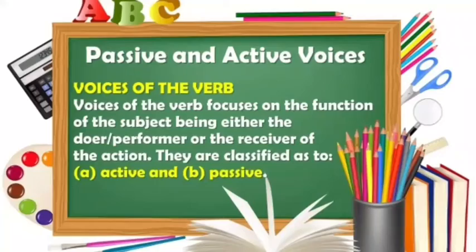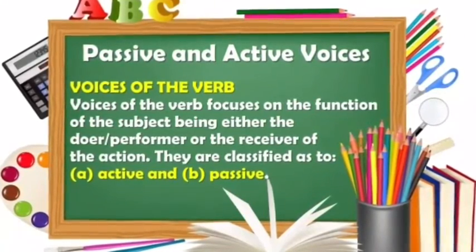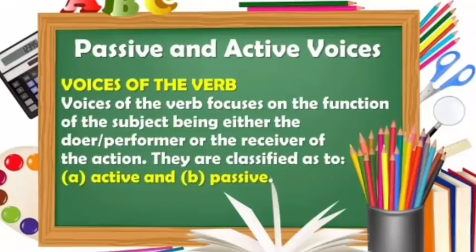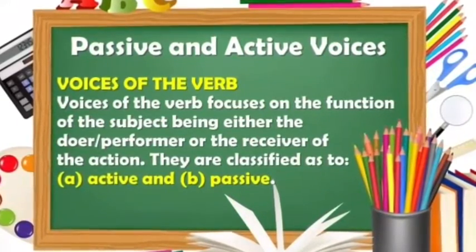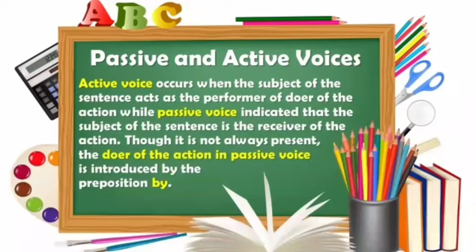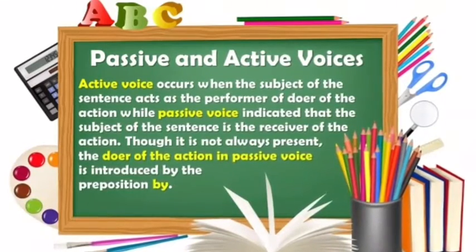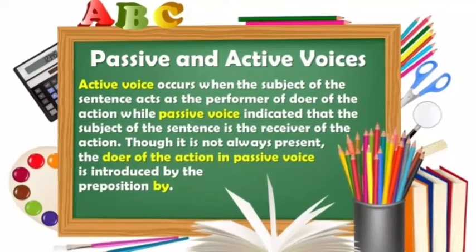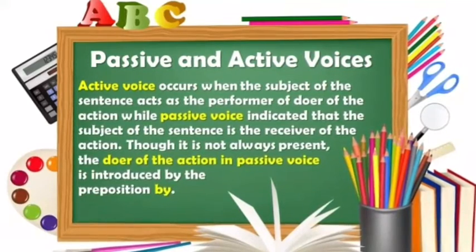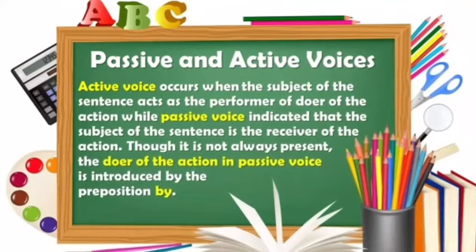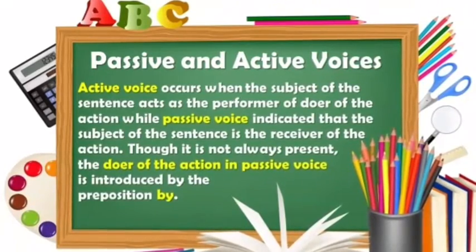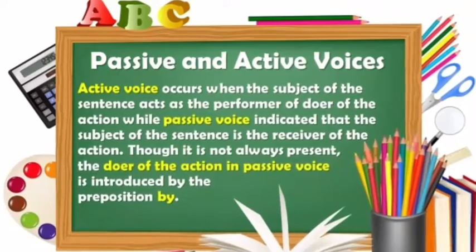Voices of the verb focuses on the function of the subject being either the doer or performer, or the receiver of the action. They are classified as two: active and passive. Active voice occurs when the subject of the sentence acts as the performer or doer of the action. Passive voice indicates that the subject of the sentence is the receiver of the action. Though it is not always present, the doer of the action in passive voice is introduced by the preposition 'by.'